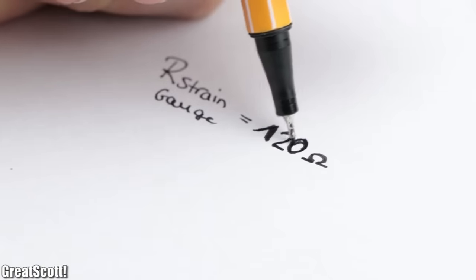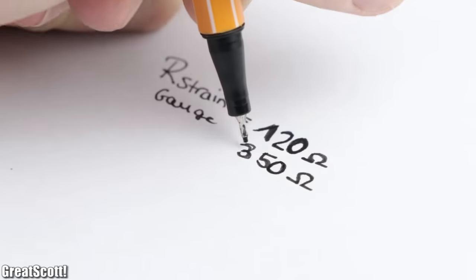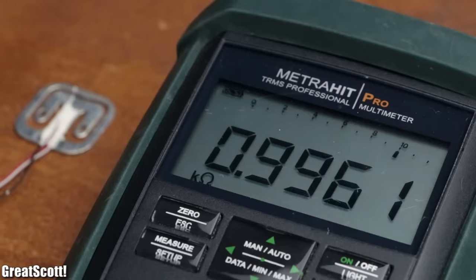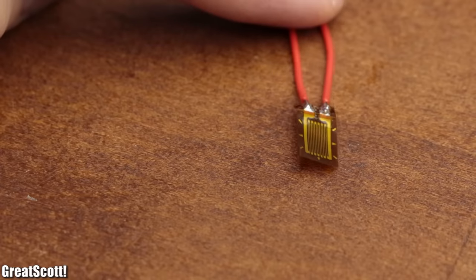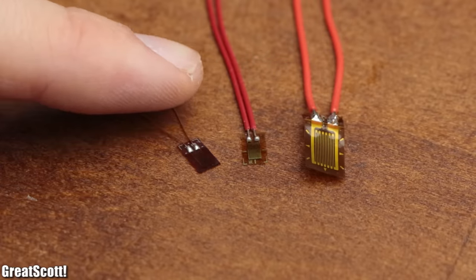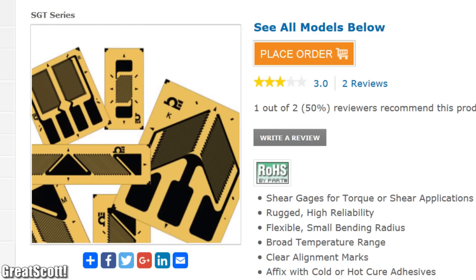Besides the 120 Ohm value, there also exist 350, 700, or 1000 Ohms as standard values. And while my example strain gauge is kind of big, there also exist smaller variations, even sometimes with different patterns.